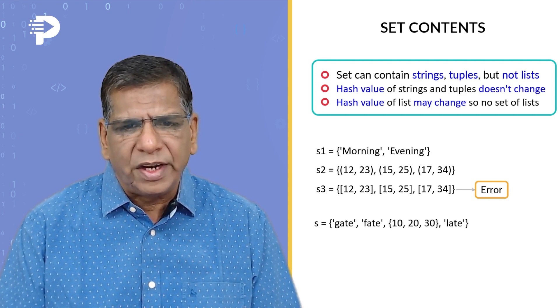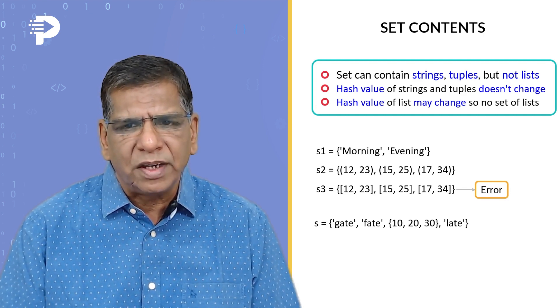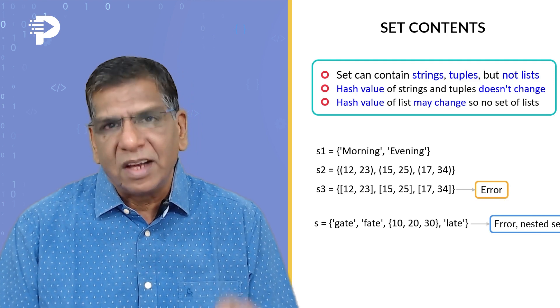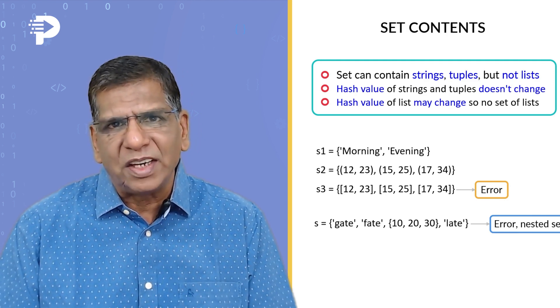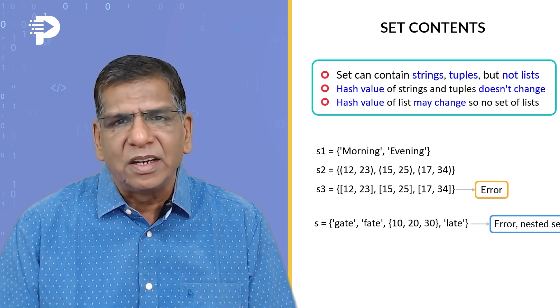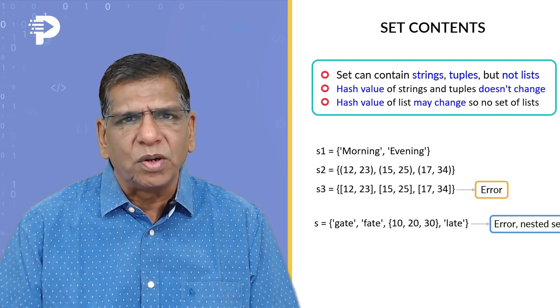If I say a is equal to gate, fate, a tuple and a string, this should be fine. Appears to be. But realize that a nested tuple is fine, a nested list is fine, but a nested set is never allowed. So this is bound to report an error.